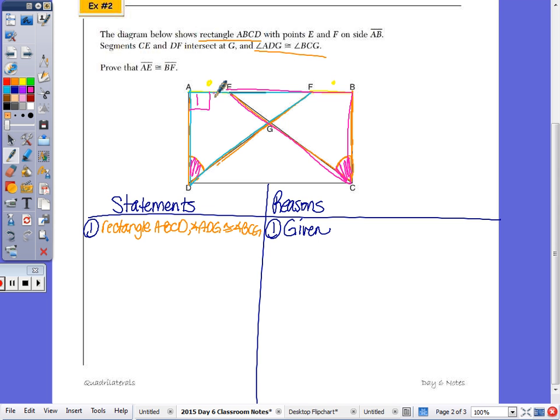Let's put a one and a two here. One and two are right angles. And then number three, they are congruent because all right angles are congruent.